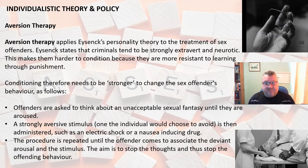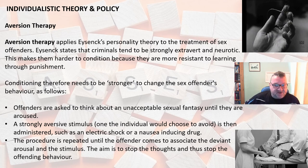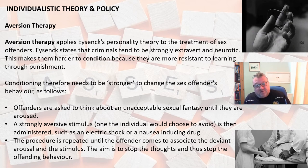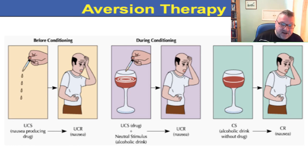For the treatment of sex offenders: offenders are asked to think about an unacceptable sexual fantasy until they are aroused, and then they receive a strong aversive stimulus — one the individual would choose to avoid, such as an electric shock or a nausea-inducing drug. The procedure is repeated until the offender comes to associate the deviant arousal with the aversive stimulus, aiming to stop the thoughts and therefore stop the offending behaviour. For treatment of alcoholism, a nausea-producing drug is added to the alcohol; every time the person drinks they are sick, and they come to associate alcohol with nausea and therefore stop drinking.